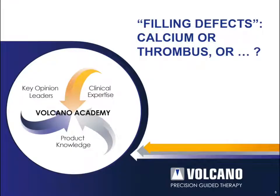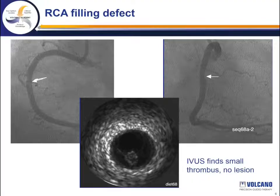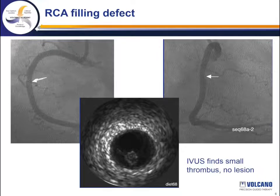Let's start with filling defects. Often the question is whether it's calcium or thrombus or something else. This is a right coronary with a very subtle mobile filling defect in its mid portion in what otherwise looks like a fairly healthy vessel.